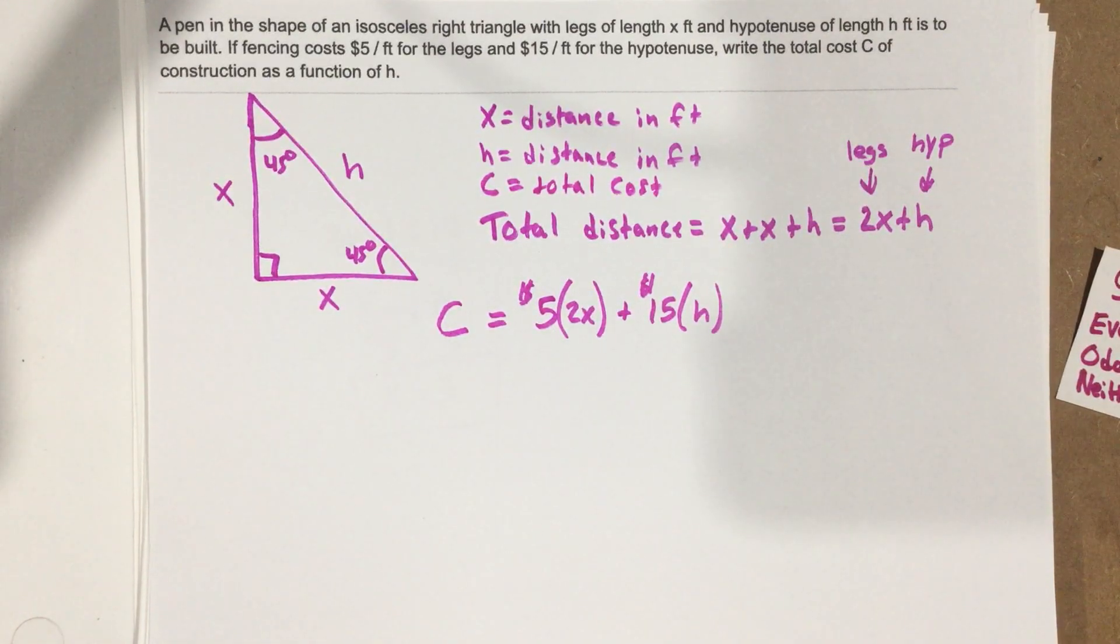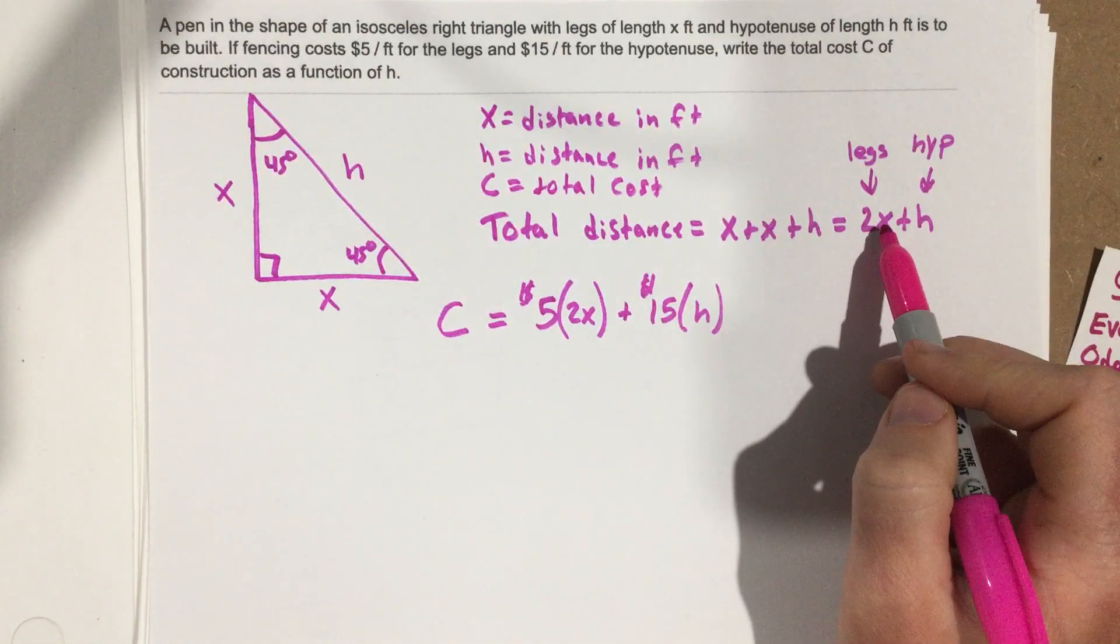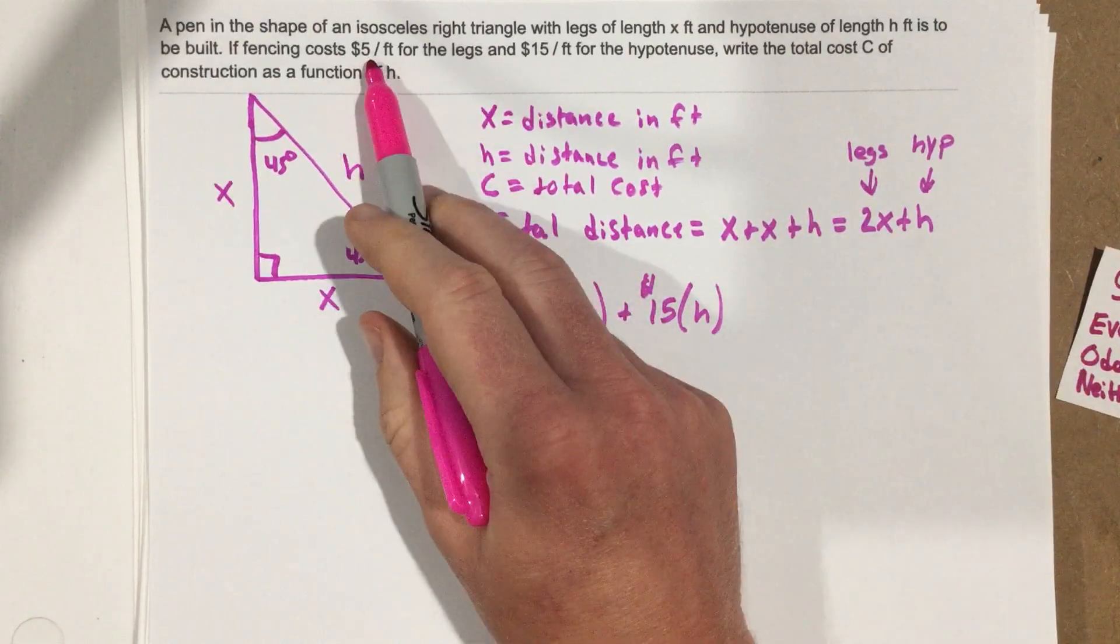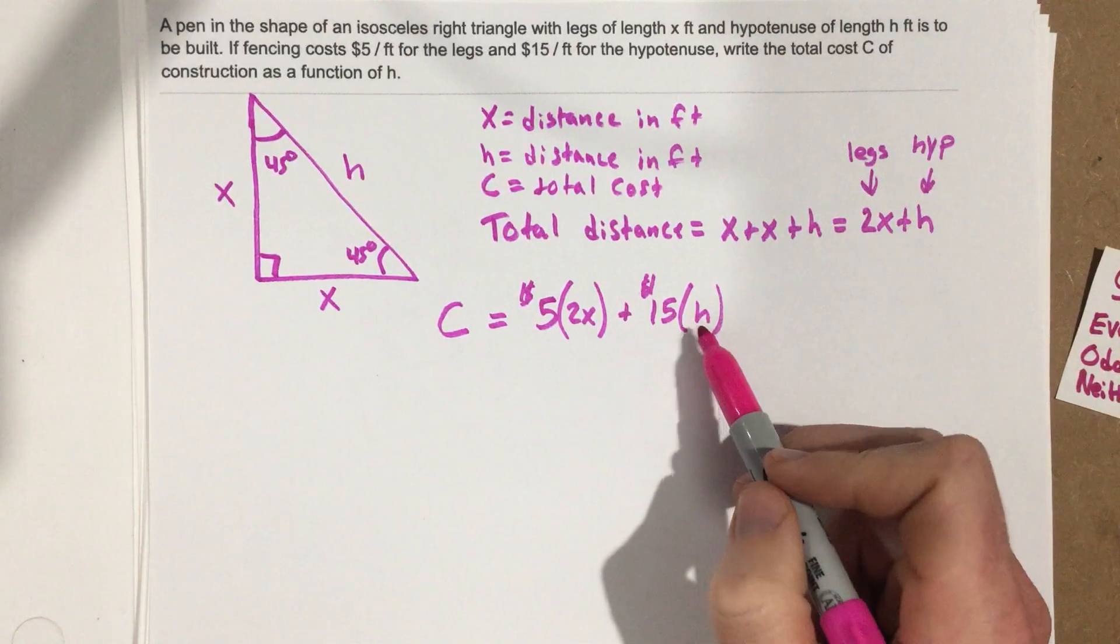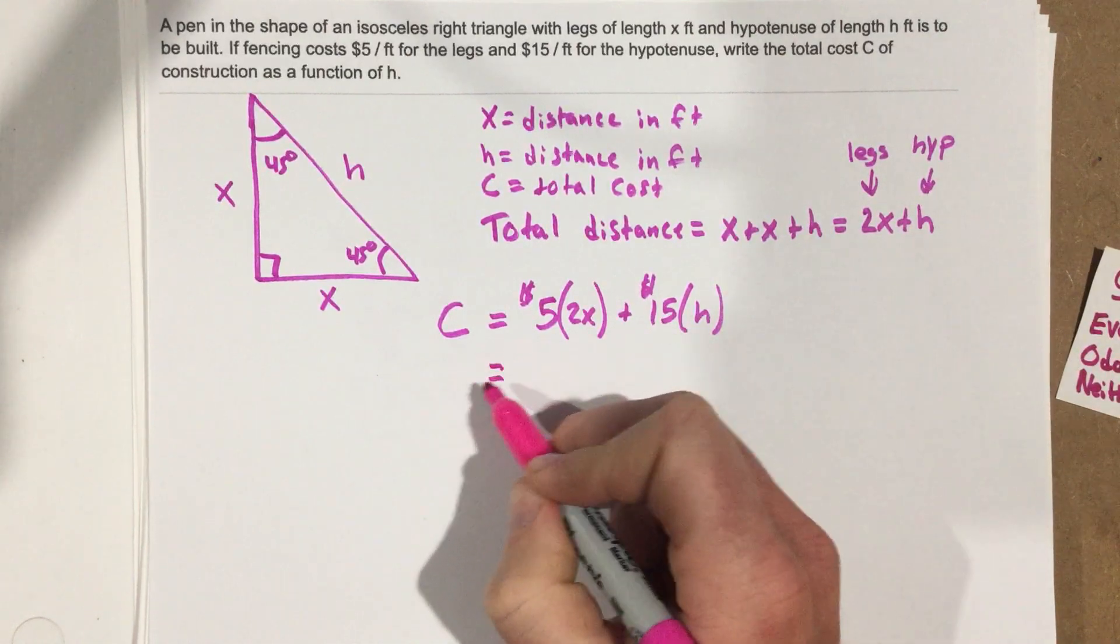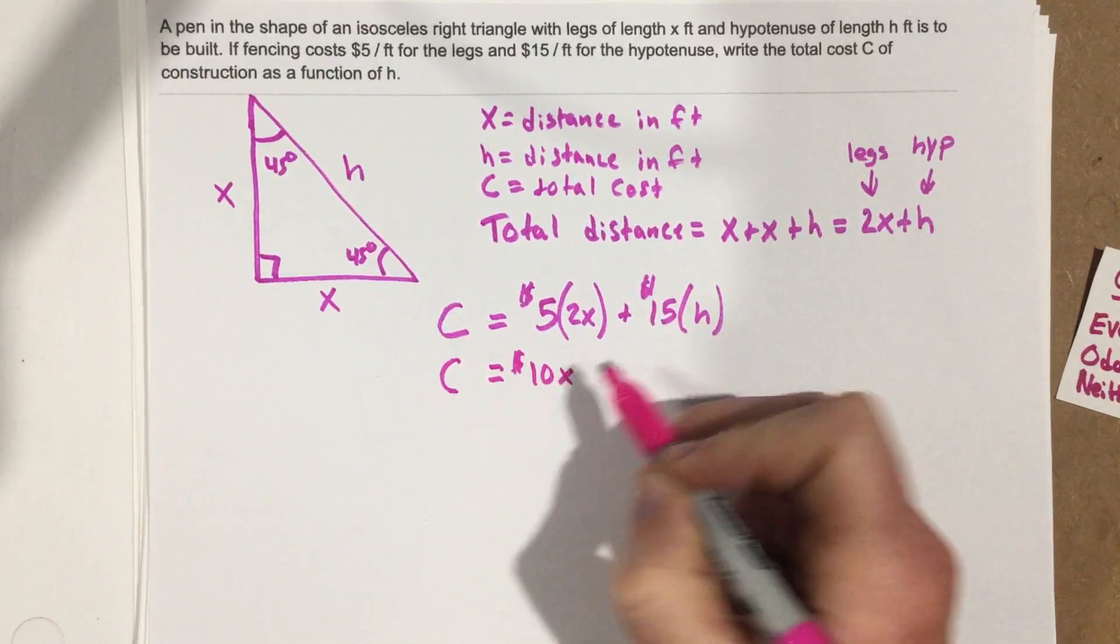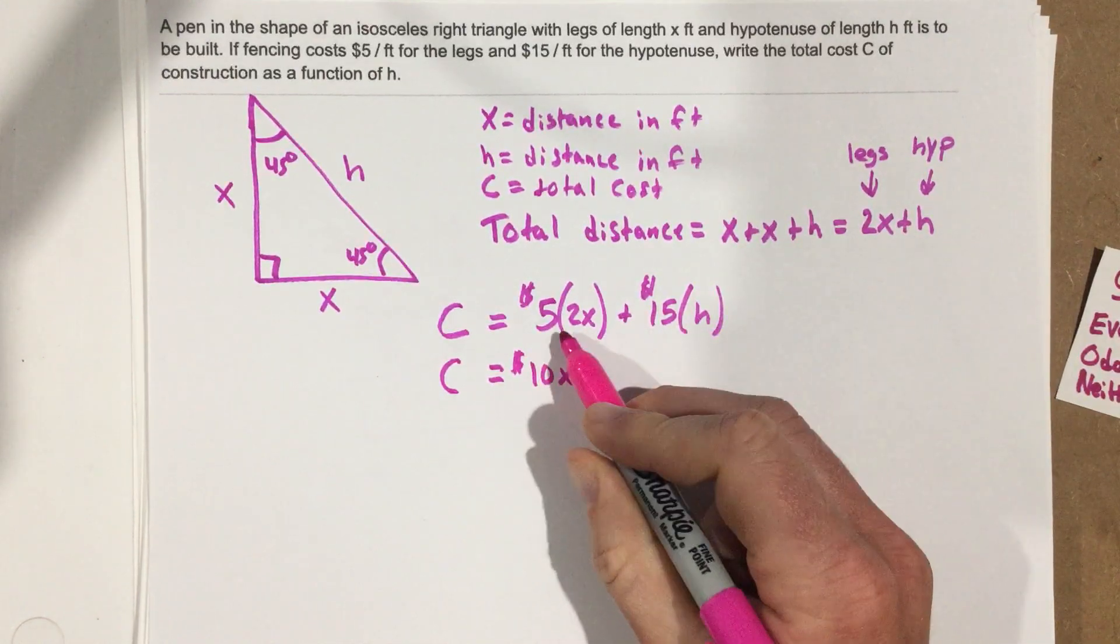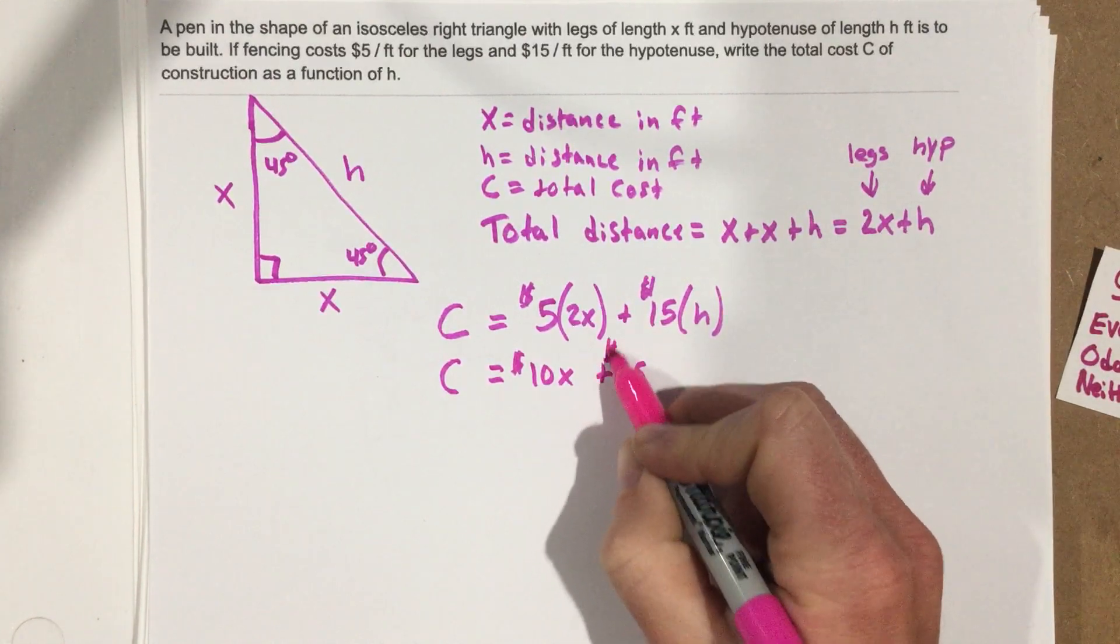Okay, hopefully that makes sense. We took the legs, which are 2X in distance, multiply it times the $5, which they cost. And we did the same thing with the hypotenuse. If we go ahead and distribute that, that's $10X plus $15H.